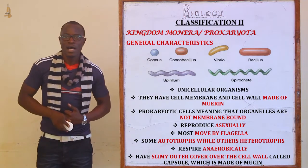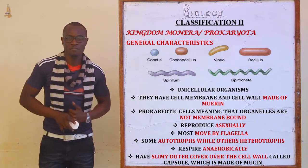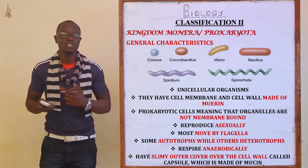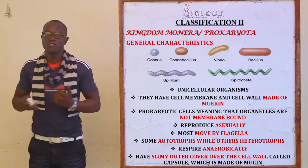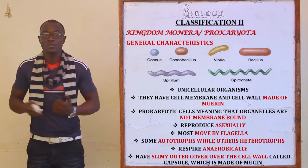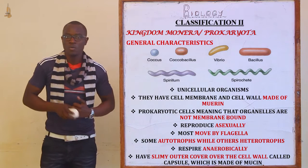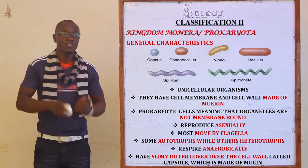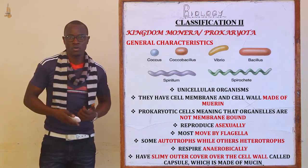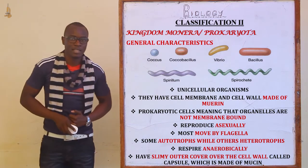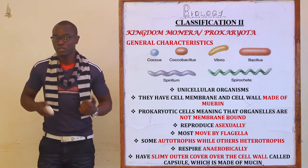Some of these organisms are autotrophs while others are heterotrophs. Autotrophs make their own food, while heterotrophs depend on ready-made food from the environment. Another characteristic is that these organisms respire anaerobically. In aerobic respiration, organisms must use oxygen, whereas in anaerobic respiration, organisms do not require oxygen for the respiration process to take place.